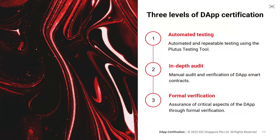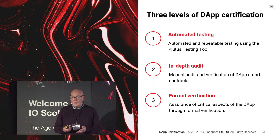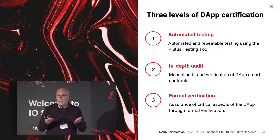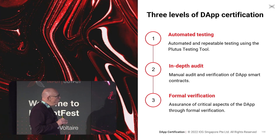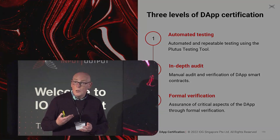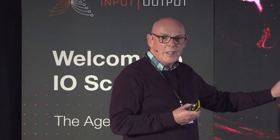So what is IOG advocating, and why? Partly because it's the right thing to do. If we ensure this for DApps on Cardano, we will as a company and as a wider Cardano community raise standards, and hopefully raise those standards for everybody. What we're advocating are three levels of certification: all sorts of different approaches to automated testing; in-depth, manual, eyeball-led audit of code; and formal verification — the application of mathematical techniques — to provide assurance of certain aspects of DApps.